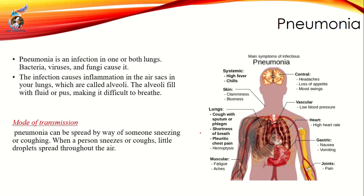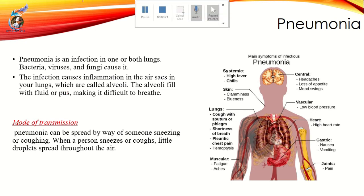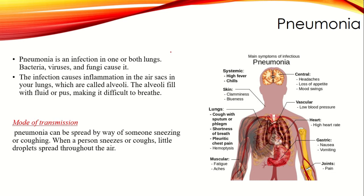The next disease is pneumonia. Pneumonia is also known as a droplet disease because it spreads through small salivary droplets when an infected person sneezes or coughs, which can infect another person. It is an infection in one or both lungs. The causative agents can be bacteria, virus, or fungus.